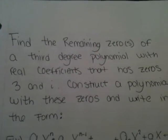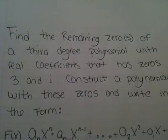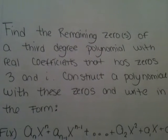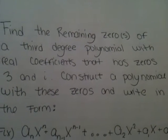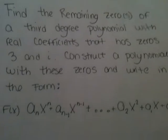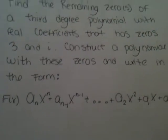If you have the equation, find the remaining zeros of a third degree polynomial with real coefficients that has zeros 3 and i, construct a polynomial with these zeros and write in the a sub n x to the n form.